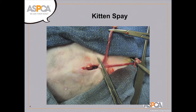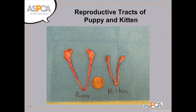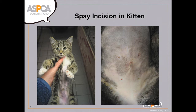Here's a picture of a kitten spay — you can tell just by looking at the instruments that the reproductive structures are tiny. The ovaries, uterus, and clamp at the fork of the uterus are all very small. It does take some manual dexterity to work with structures that small. I advise veterinarians new to pediatric spay-neuter to start with patients at six or seven months and gradually work down to five, four, three, and two months to build confidence.